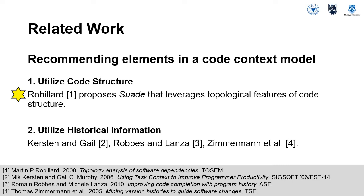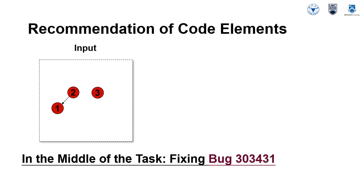The recommendation can also utilize the history of the software development project. The history may describe which files were changed as part of a task as found in a source code repository, or may contain information about both viewed and changed files as found in interaction history or change history data. Techniques like association rule mining can be used against historical information to suggest what other code elements have been associated with given seed code elements in the past.